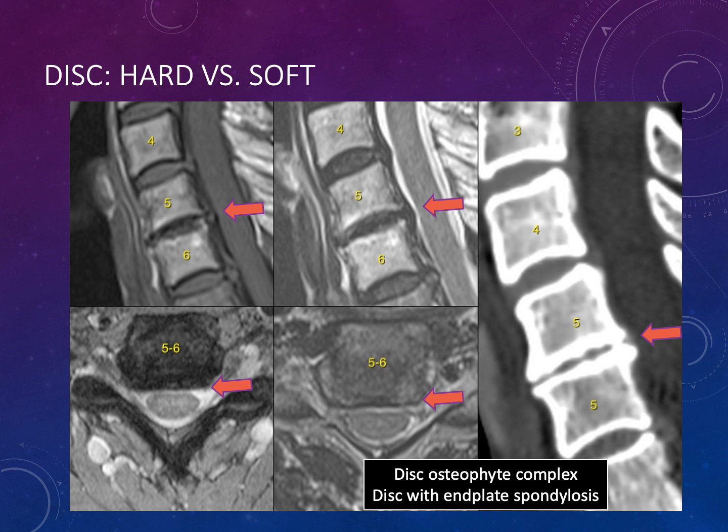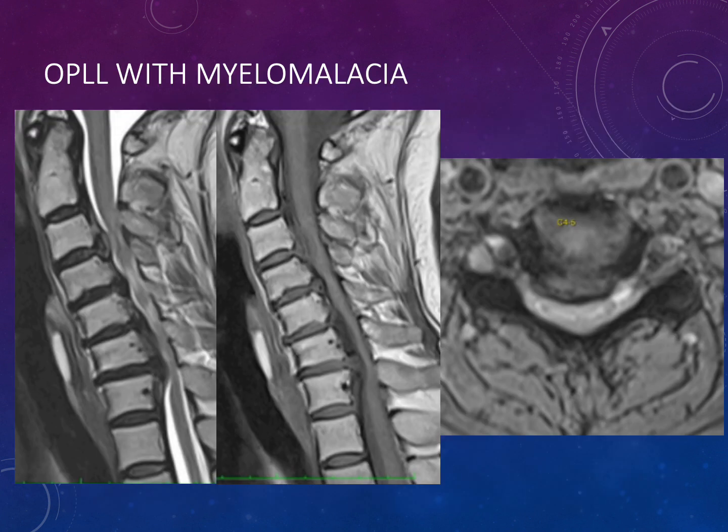To summarize the disc evaluation workflow: identify any abnormality on sagittal images, look for contour abnormalities and where they are located, assess how large they are, and then determine whether it's purely disc or disc along with end plate spondylosis.